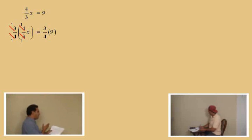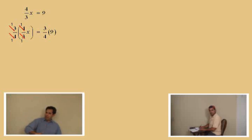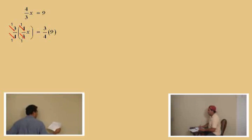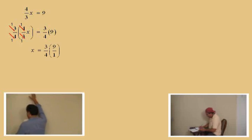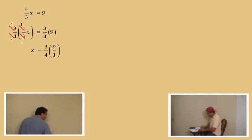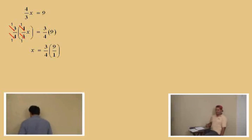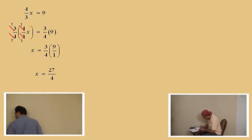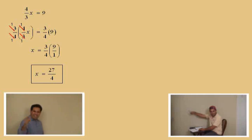On the right hand side, three fourths times nine — we cannot kung fu that problem because four does not divide evenly into nine. We have to write nine as a fraction: three fourths times nine over one. Multiplying straight across the top and straight across the bottom, we get x equals twenty-seven over four. Don't forget to box your answer!